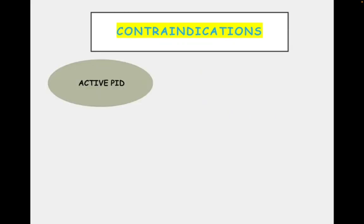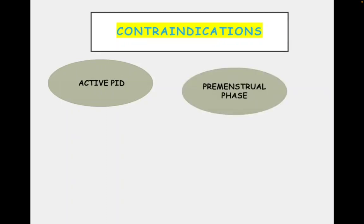The contraindications are all the same as HSG. Any active PID is a contraindication, because we do not want to introduce or worsen any existing infection. That's why we will not do any procedure when active PID is present. We also will not do it in the premenstrual phase.